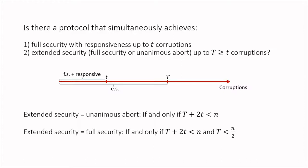For the case where extended security is unanimous abort, this is possible if and only if large T plus two times small t is smaller than n. For the case where full security is required as extended security, we additionally need that large T is smaller than n/2.